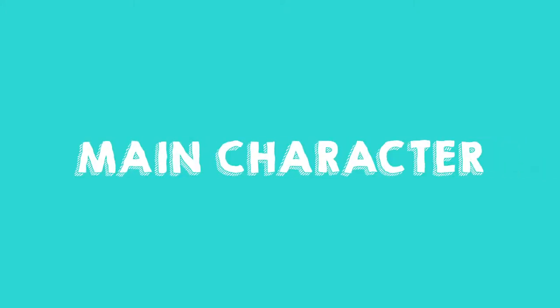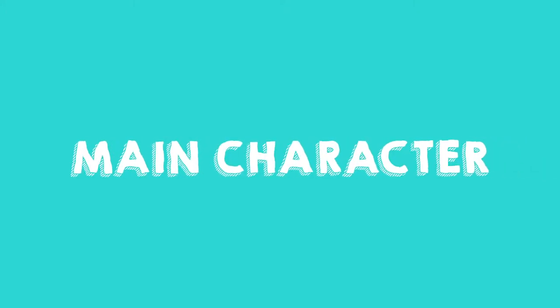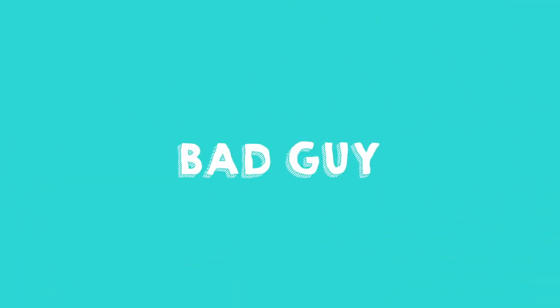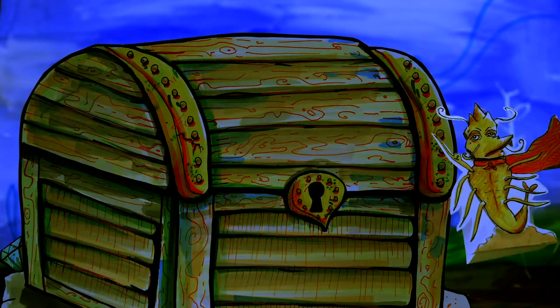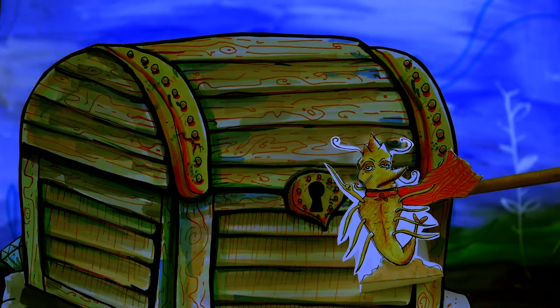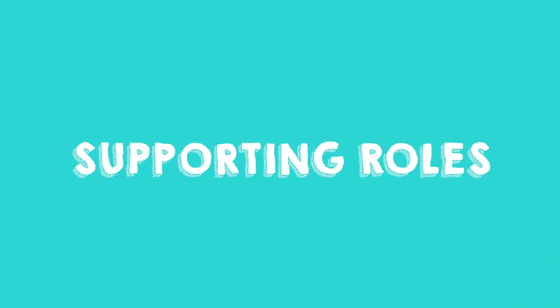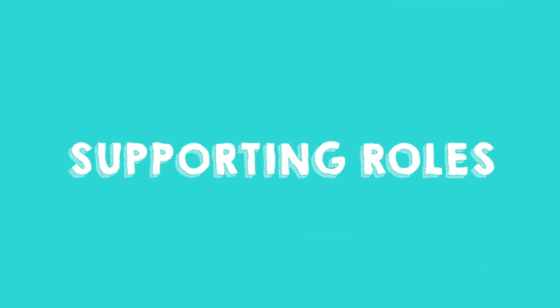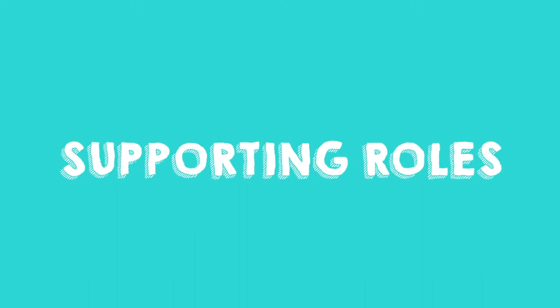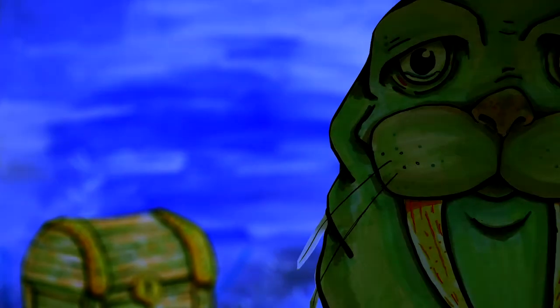Often there are different kinds of characters. There is a main character — this is the most important character, what the movie is all about. In our animation that was the shrimp. Often there is also a bad guy or someone who bothers the main character. In our case it is not really a bad guy, but there is a chest that is contrary. Often there are also supporting roles — characters who play in the movie but do not play the main role, like for instance the walrus.